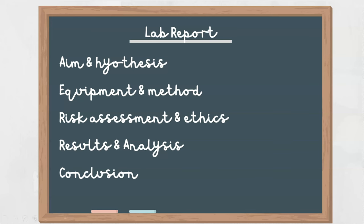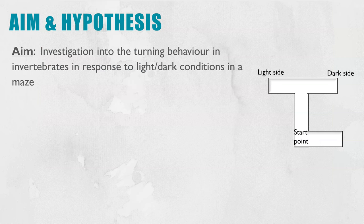I'm going to be going through the aim, hypothesis, equipment, method, risk assessment, ethics, results, analysis and conclusion so that you'd be able to write up a full lab report. I'm going to put the time codes at the bottom so you can jump through to the bits that are relevant for you, or if you need to know the whole thing, just stick on and you can see the entire lab report.